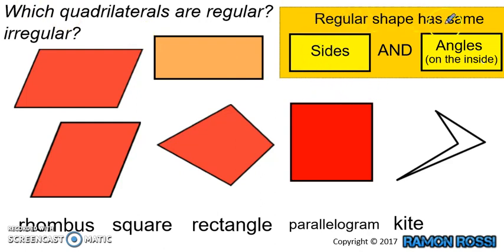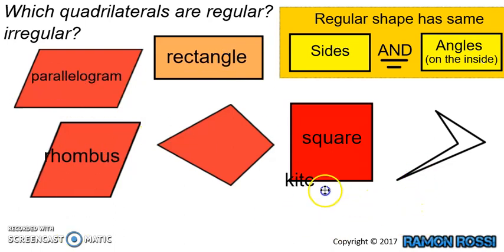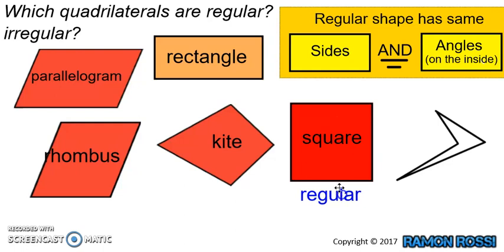So we can work out this rule: a regular shape has all its sides equal in length, and all its angles on the inside must be the same as well. The square is the only one here which is regular — all its sides are the same and all its angles on the inside are right angles, so it ticks both boxes and it's regular.